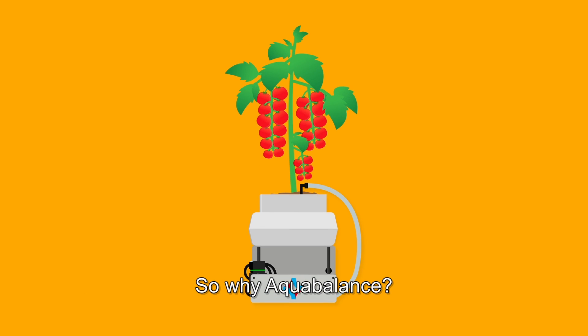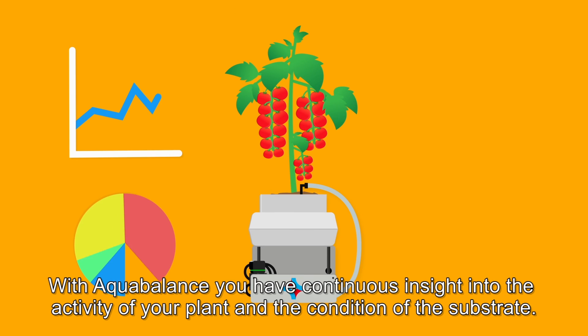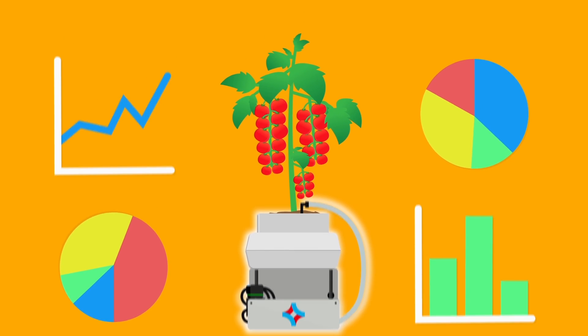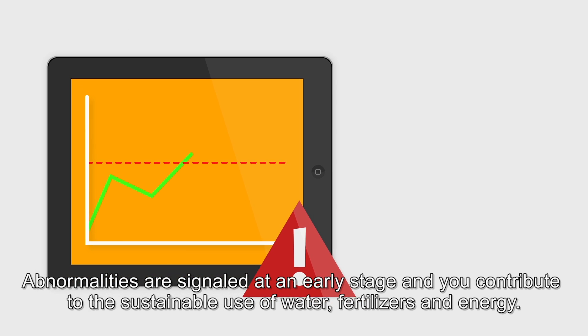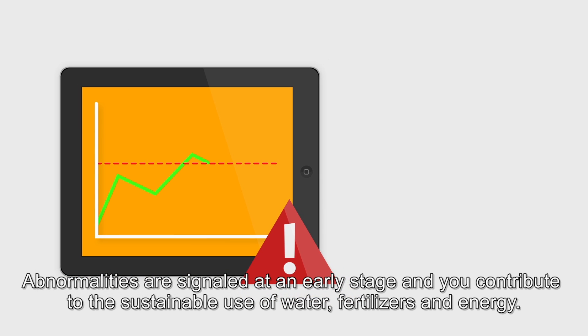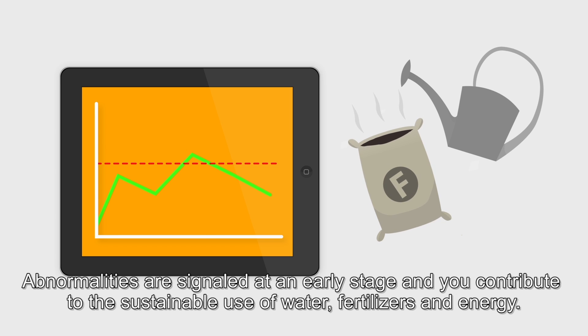So why Aqua Balance? With Aqua Balance, you have continuous insight into the activity of your plant and the condition of the substrate. Abnormalities are signalled at an early stage and you contribute to the sustainable use of water, fertilisers and energy.